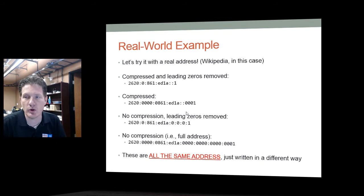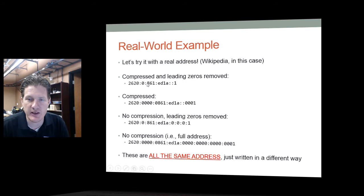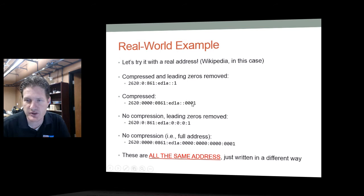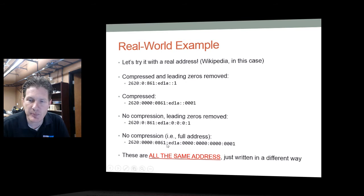Let's try a real-world example using Wikipedia's IPv6 address. Here we see the address compressed with leading zeros removed. The leading zeros have been removed from each block — for example, '0001' becomes '1' and '0000' becomes '0.' Here is the version with only leading zeros removed but no compression. And here is the fully compressed version where the double colon removes three blocks of zeros. All four of these examples represent the same address, just written differently.